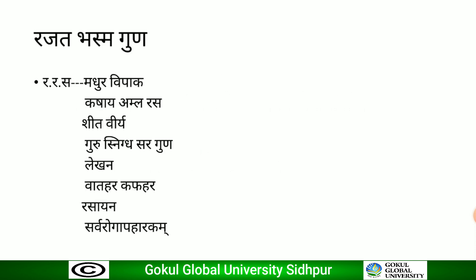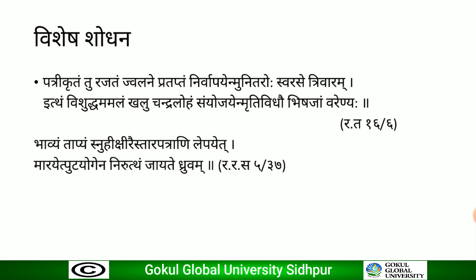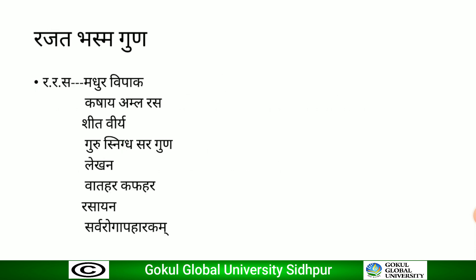Rajata Bhasma Guna, as per Rasarana Samucheya: it has Madhura Vipaka, Kashaya-Amla Rasa, Sheeta Veerya, and is Guru, Snigdha, and Sara Guna. Properties include Lekhana, Daha Hara, Kapha Hara, Rasayana, and Sarvaroga Hara. The preparation method: required quantity of Shodhita Swarnamakshika Bhasma is saturated with Nimbu Swarasa; the paste is applied over Shodhita Rajata foils, dried, enclosed in Sharava Samputa, and subjected to 1 Laghu Puta. The process is repeated 30 times, and the final black-colored Rajata Bhasma obtained is stored in a suitable airtight container. Matra is 1/4 to 1 Ratti, with Anupana of Madhu and Ghrita.